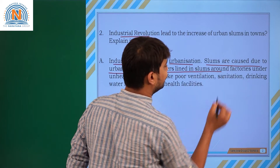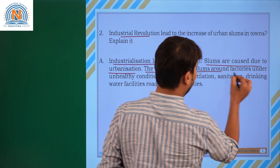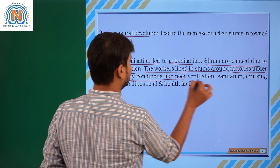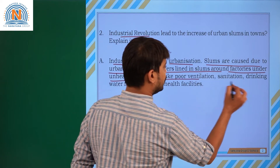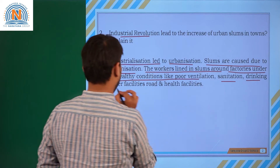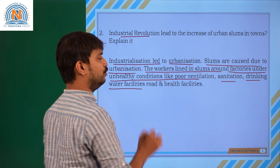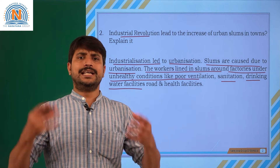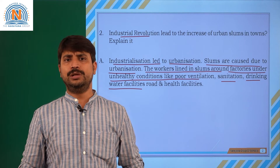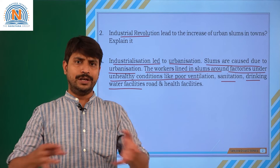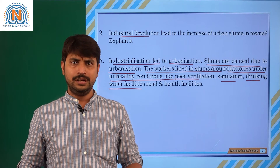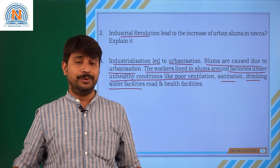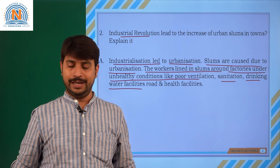The workers lived in slums around the factories under unhealthy conditions like poor ventilation, sanitation, drinking water facilities, road and health facilities. Each of these developed in the surroundings of industries when large numbers of houses were built nearby the factories.